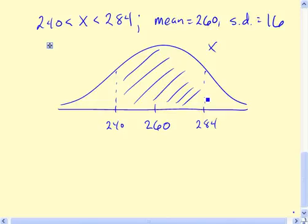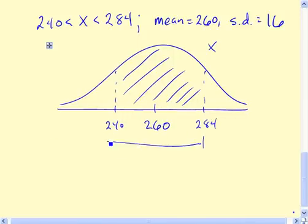Now the function normdist will tell us the area below the graph to the left of any given x value. So we're going to have to use normdist twice, one to tell us the area from 284 to the left, which is going to give us everything, not only the area we want, but all the stuff in this tail area as well, but that's okay.